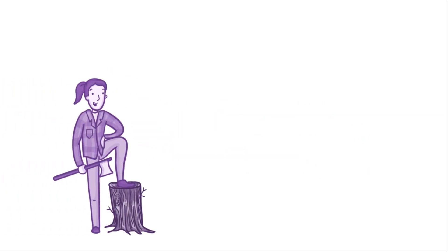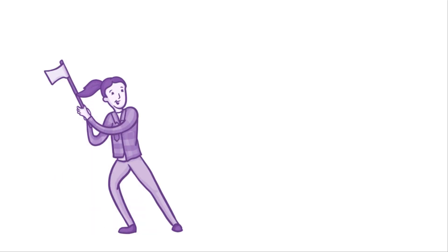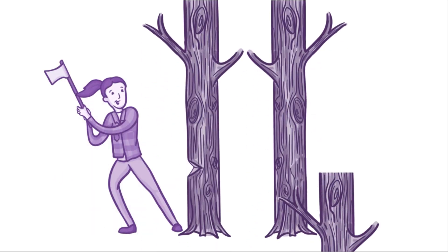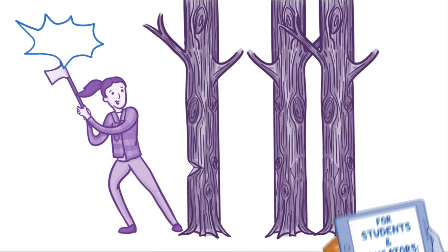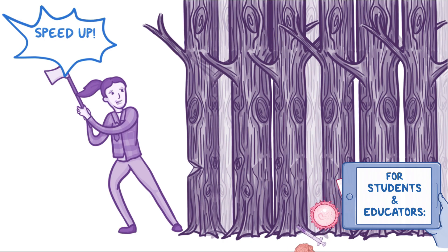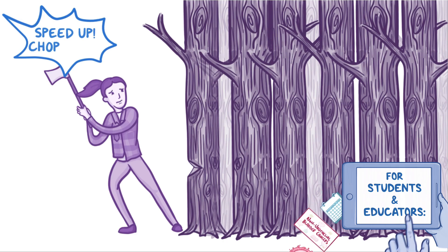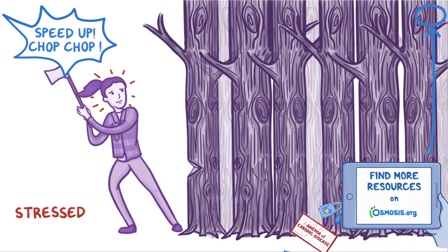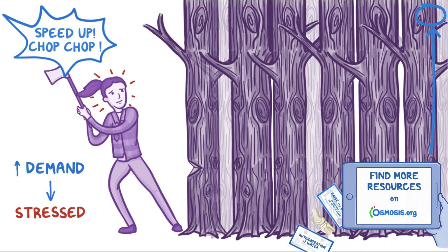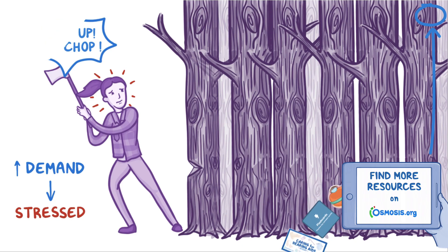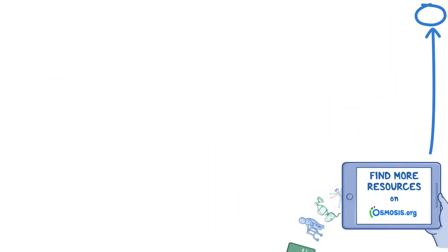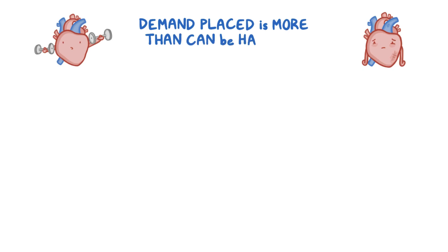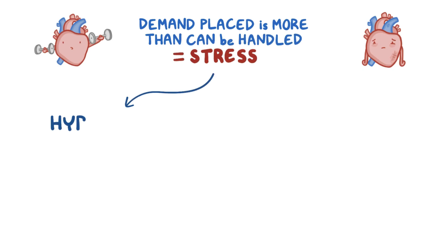Imagine a lumberjack. At first she can handle cutting down a few trees a day, but suddenly her boss wants her to chop down an entire forest by the end of the week. Now she's stressed out from the increased demand. Our body is the same. When the demand placed on an organ or tissue is more than it can handle, it's called stress, and the body can adapt through either hyperplasia or hypertrophy.